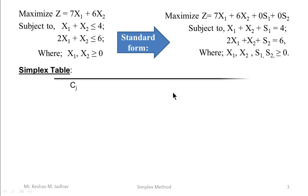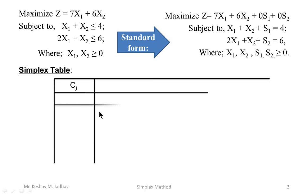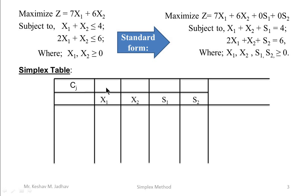In the simplex table, the first row includes the coefficient of variables in the objective function, and the second row includes all the variables in the problem. In the first row we write the coefficient of respective variables in the objective function: x1 has coefficient 7, x2 has coefficient 6, s1 is 0, and s2 is 0. The C0 row indicates the profit or cost per unit to the objective function of each variable. The first column is the cb column, representing the coefficient of the current basic variable. The second column is the basis column, also called the product mix column, which represents the basic variable of the current solution.